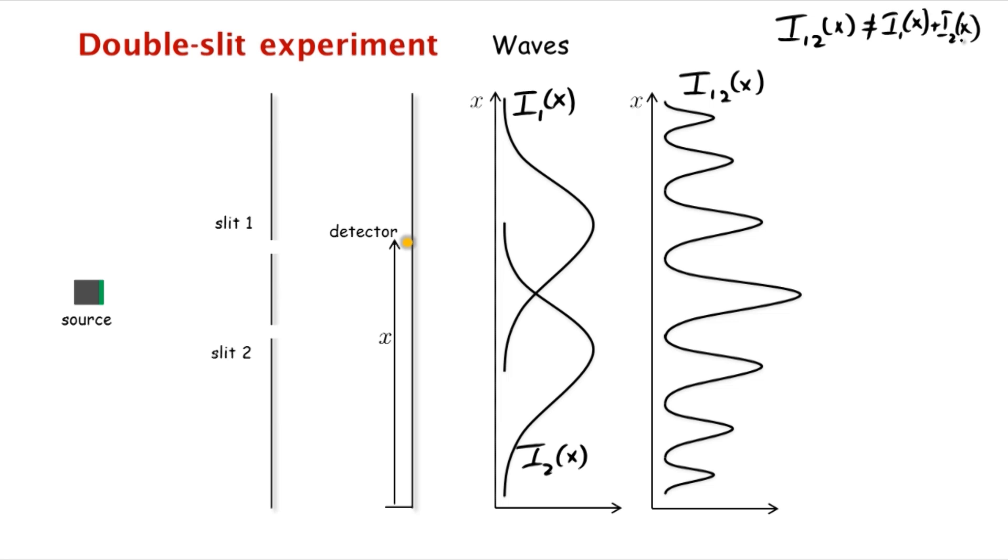So the reason is that the energy of the wave is really, so i of x is proportional to the height of the wave at x squared. The energy i of x is proportional to the square of the height of the wave at x.